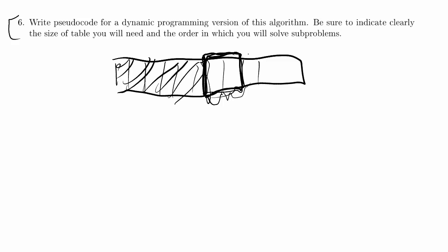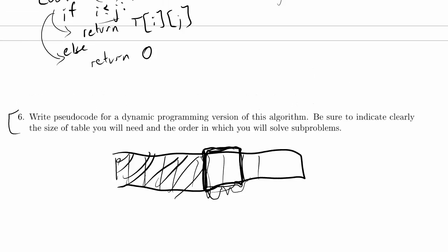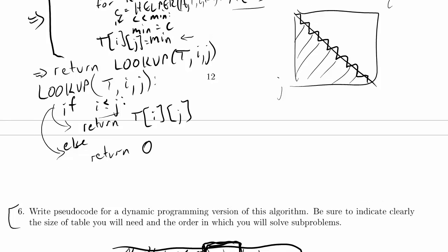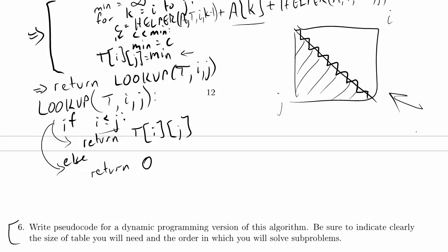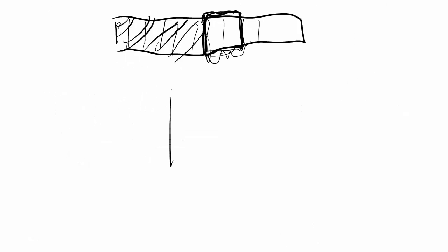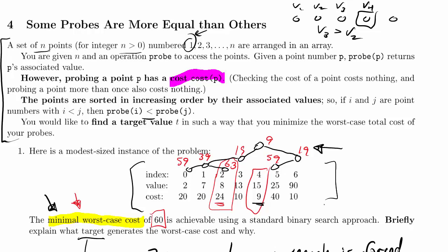Let's look back at the table we drew at the end of the previous problem, where we noted the entries in the table we actually use. There are seven entries in the table with values and costs. We should be able to fill this table and figure out the optimal solution. We know the optimal solution is binary search for this particular table, but with different cost values binary search might not have been the optimal approach.